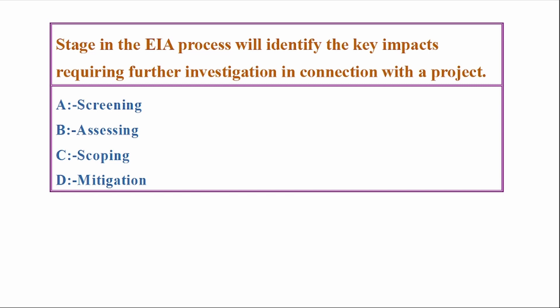Stage in the EIA process will identify the key impacts requiring further investigation in connection with their project. Options: screening, assessing, scoping, mitigation. Answer: Option C, scoping.